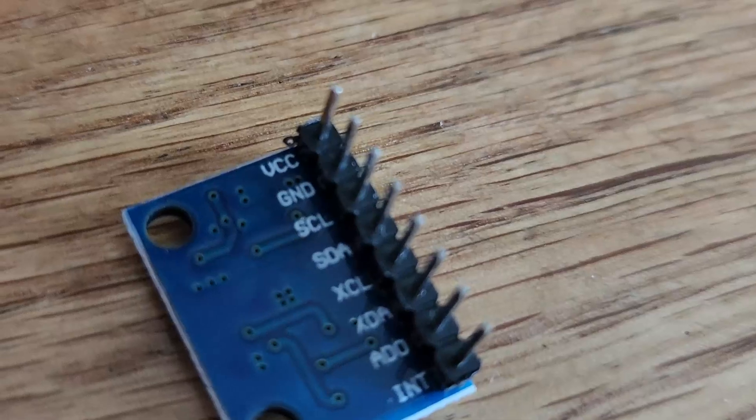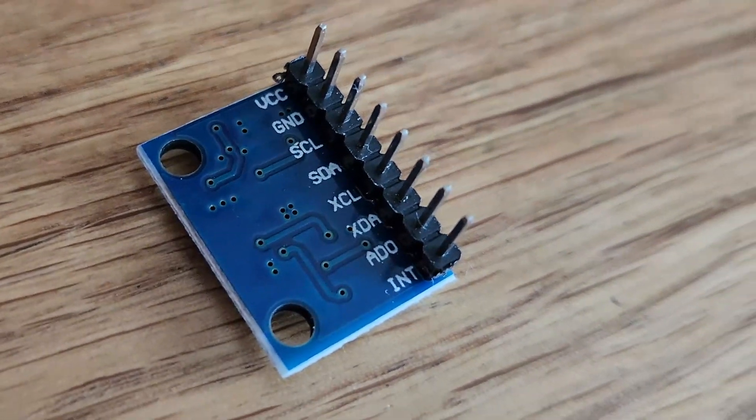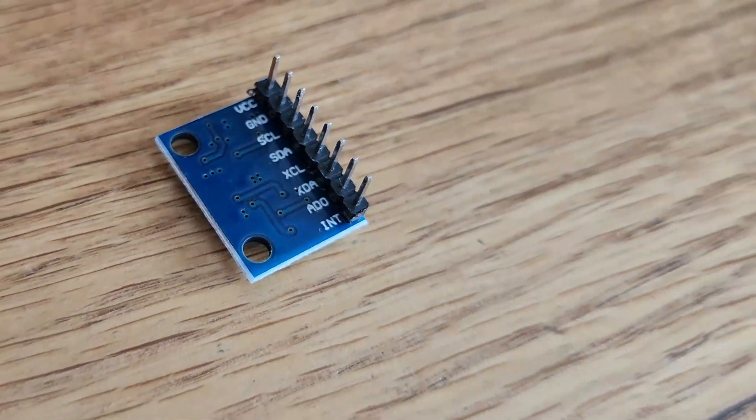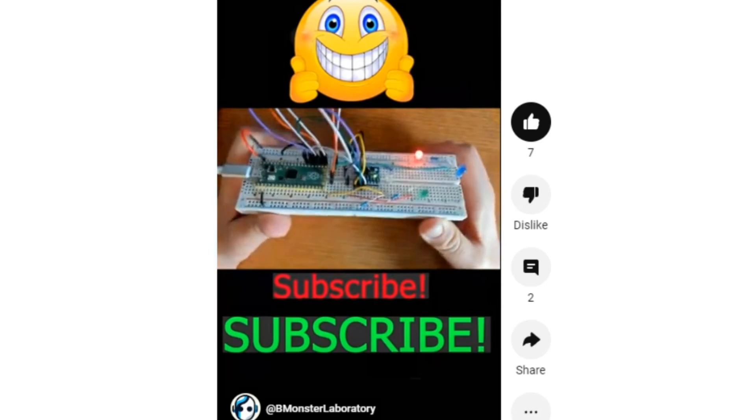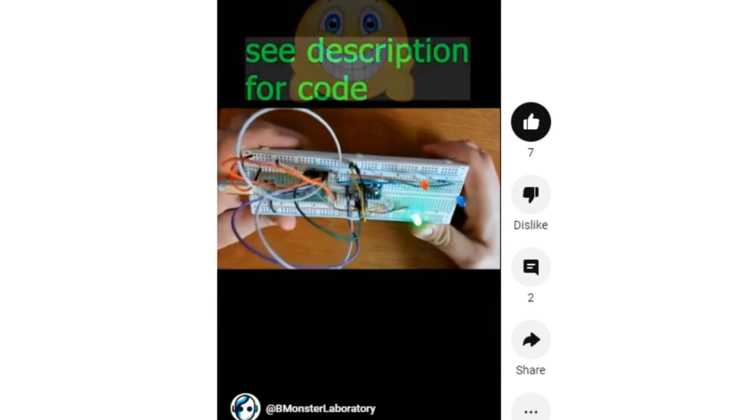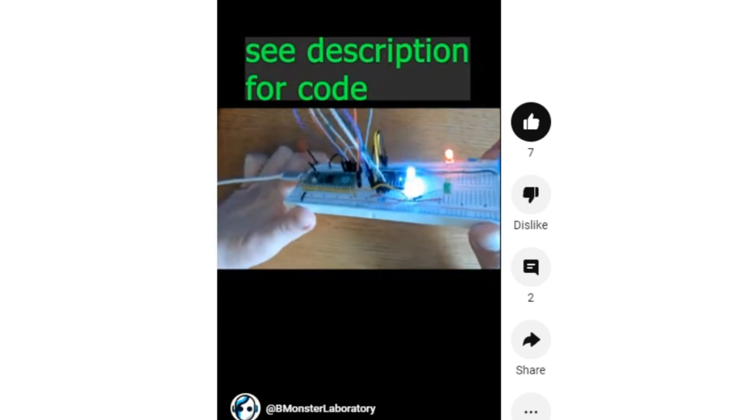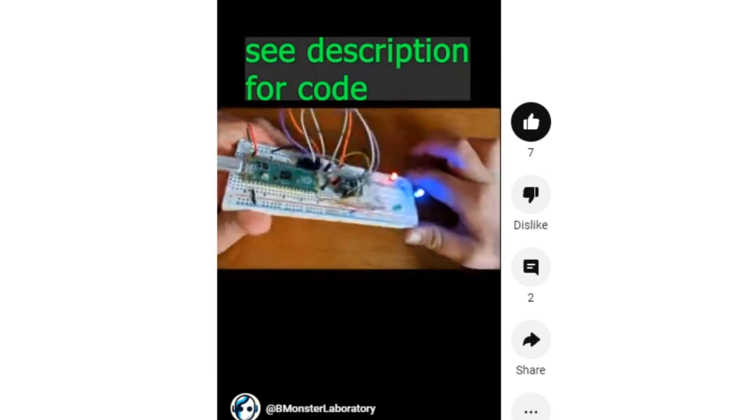The accelerometer component measures linear acceleration along 3 perpendicular axes x, y, and z, and this helps in determining the angle at which the sensor is tilted with respect to the Earth's surface. The gyroscope measures the rate of rotation around the same 3 axes. This is useful for detecting rotational movement and changes in orientation.